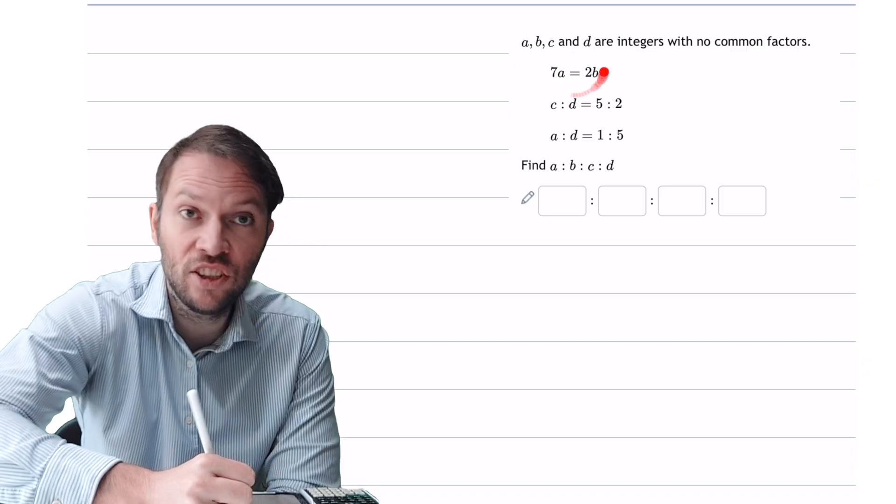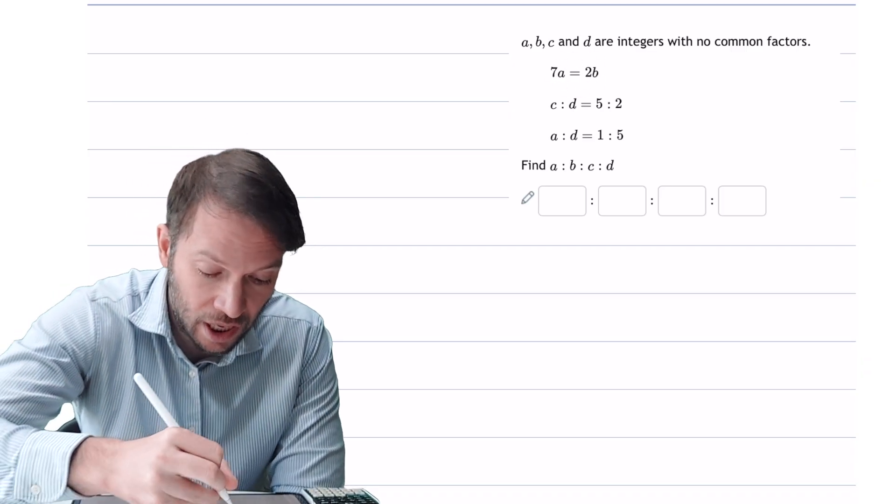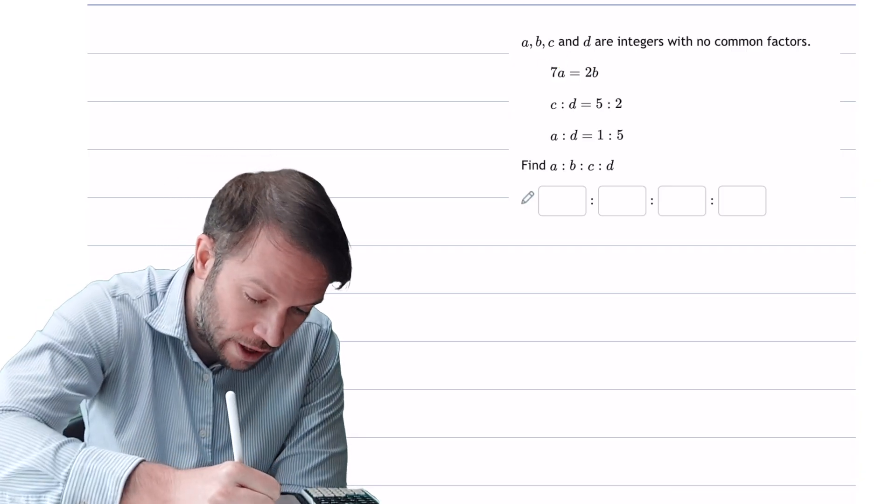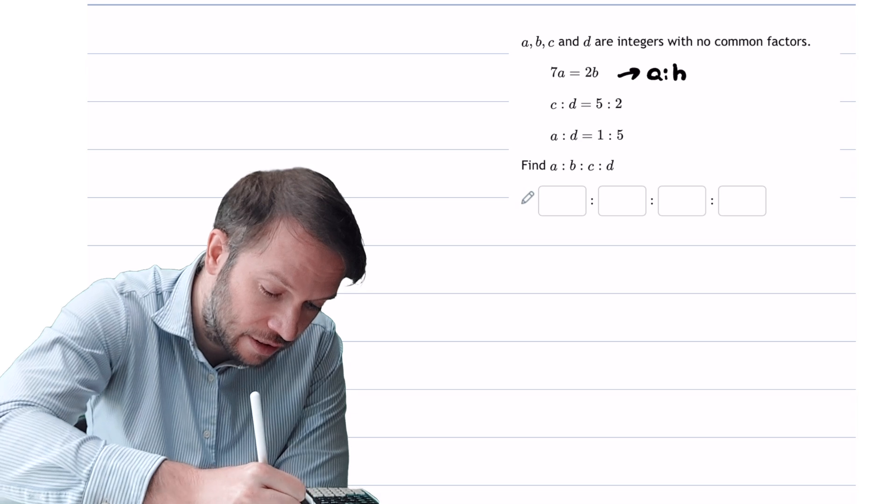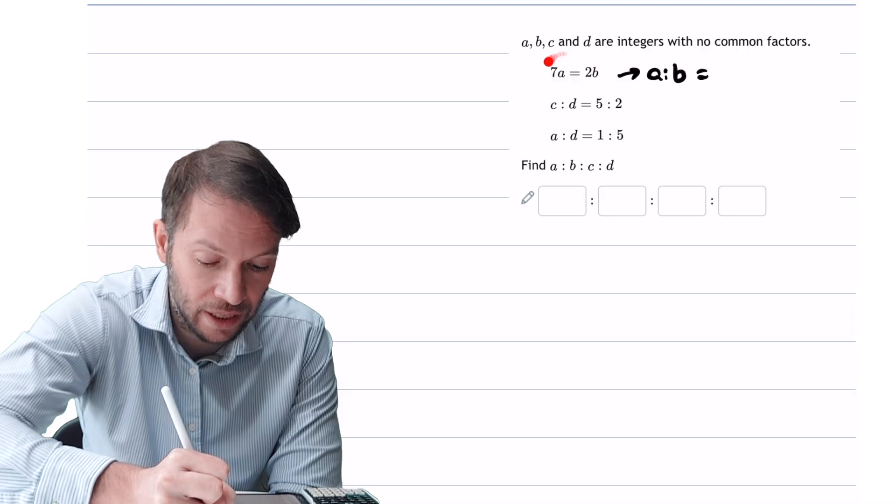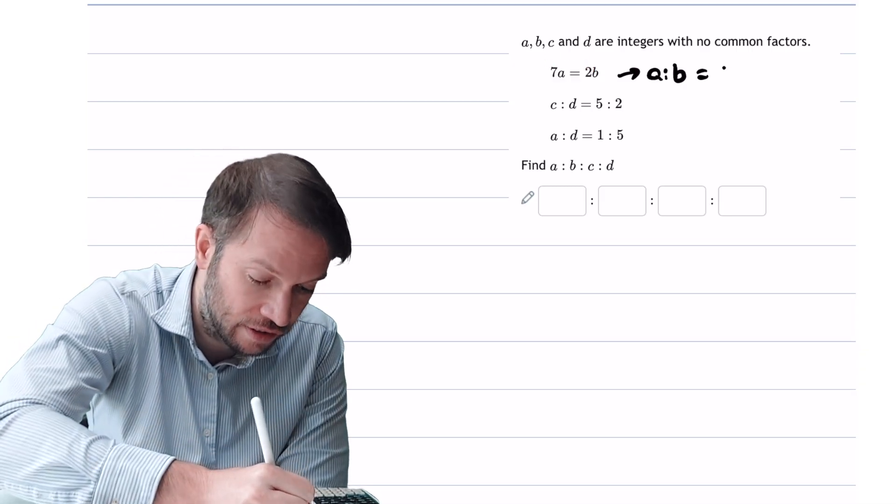Now firstly we can convert this equation into a ratio, and we saw how to do that in previous videos. But if 7a is equal to 2b, the ratio of a to b is, and we can actually just swap the numbers in front of the a and the b, the coefficients of a and b. So if you swap the 7 and the 2, you get 2 to 7, like that.